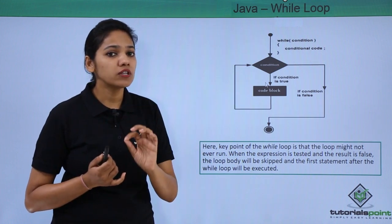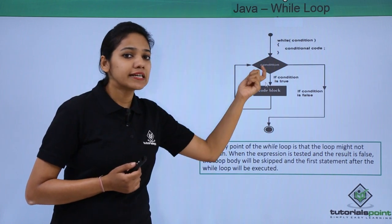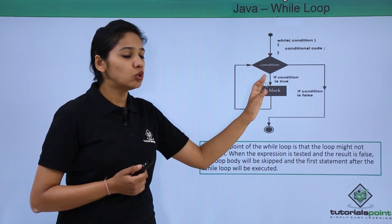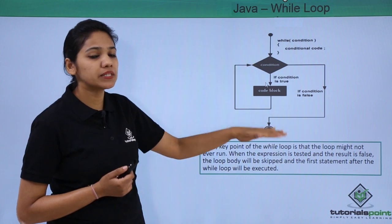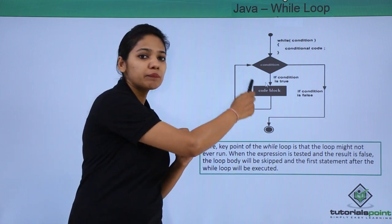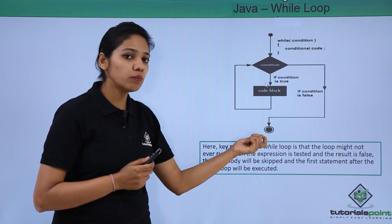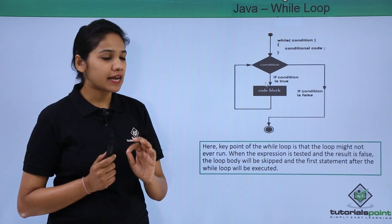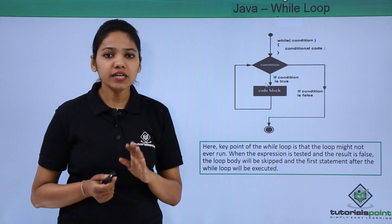What if the condition is false on the very first iteration? When you start executing the program and on the very first check the condition is false, the loop will terminate and the flow will move to the next statement immediately after the loop. One key point to remember: if the condition is not true the very first time, the while loop will never execute.